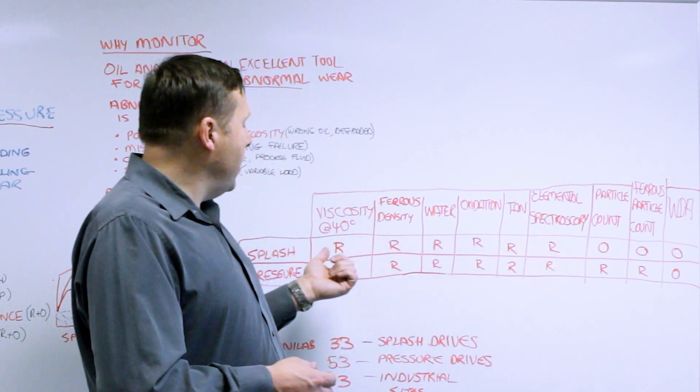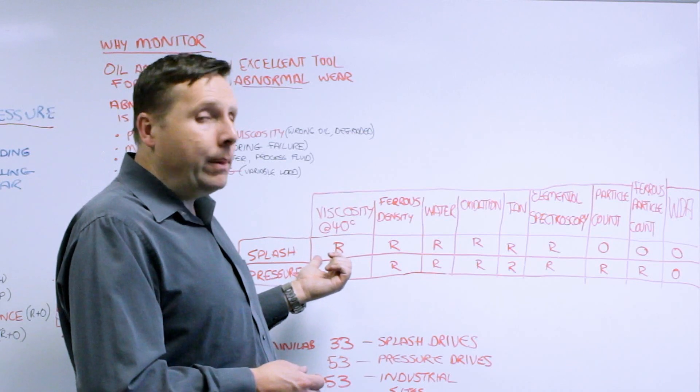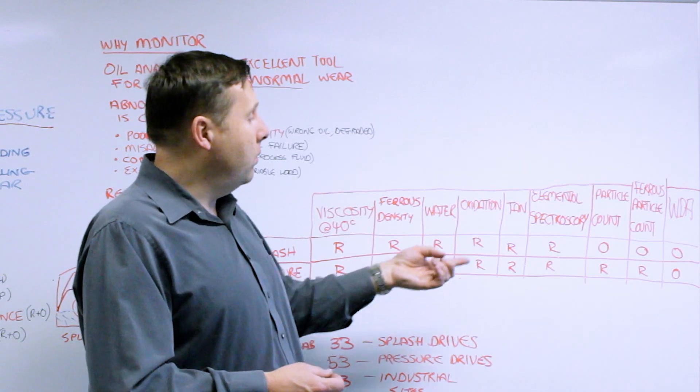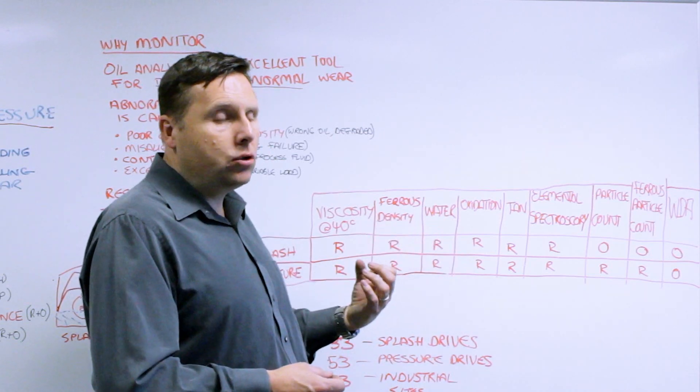Particle count, we say it's optional for splash lubrication systems. They're usually high viscosity above an ISO 320 so ferrous density is a great screening tool.